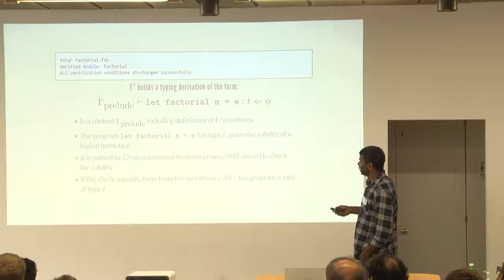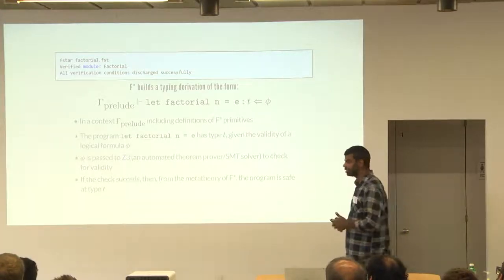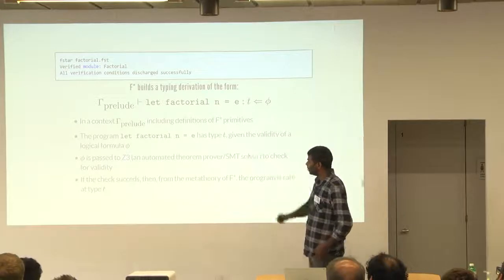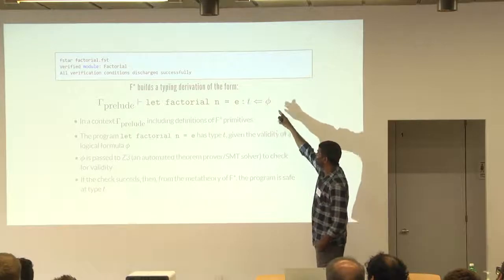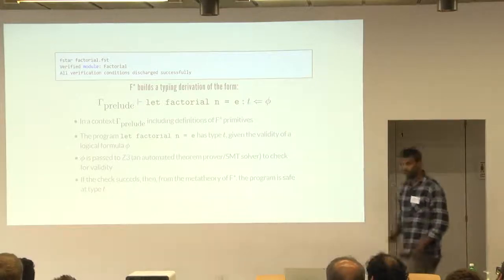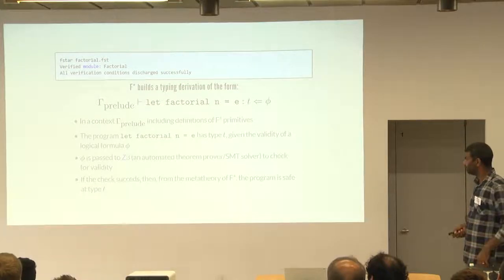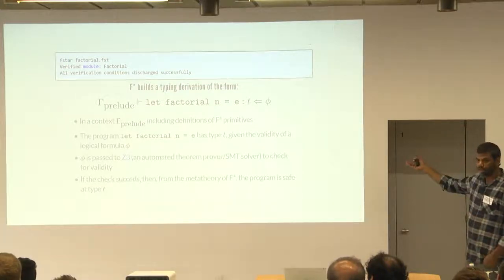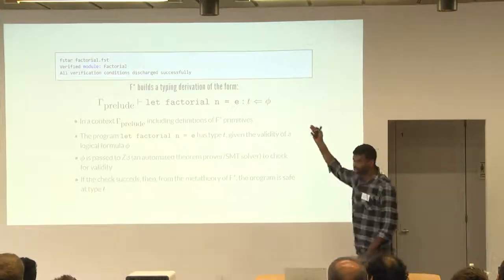Roughly what this looks like is that at the core of F-star, F-star's typing judgment, the way you can see it is that in a particular context, the factorial program has a particular type T, subject to a verification condition V, and that verification condition gets passed to Z3. And if it checks, if Z3 is able to prove that verification condition, the meta theory of F-star says that factorial indeed has that type.